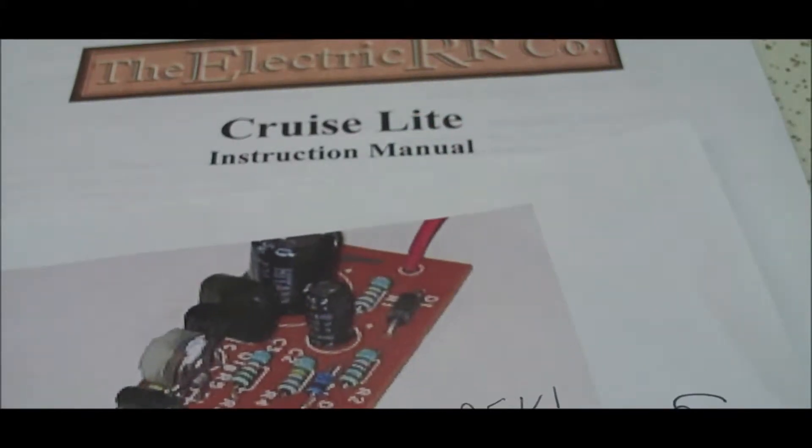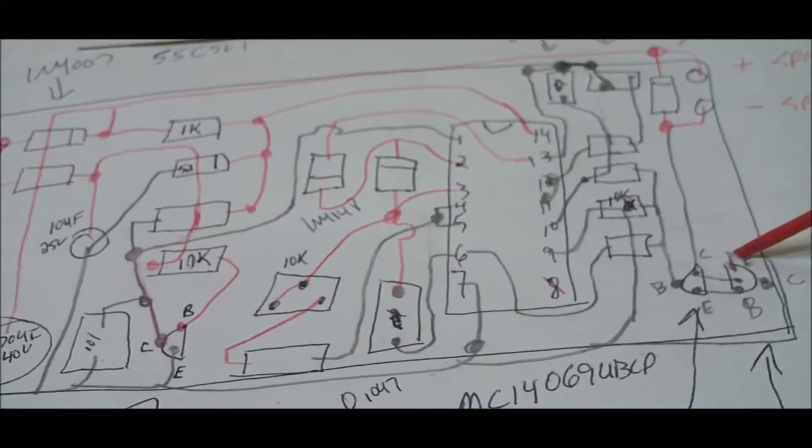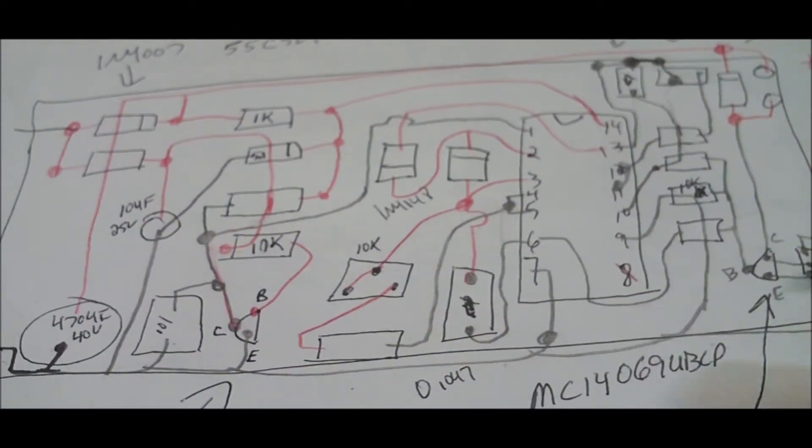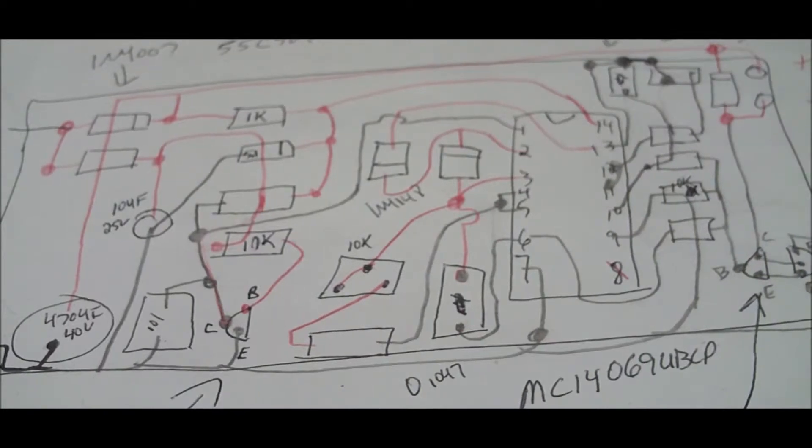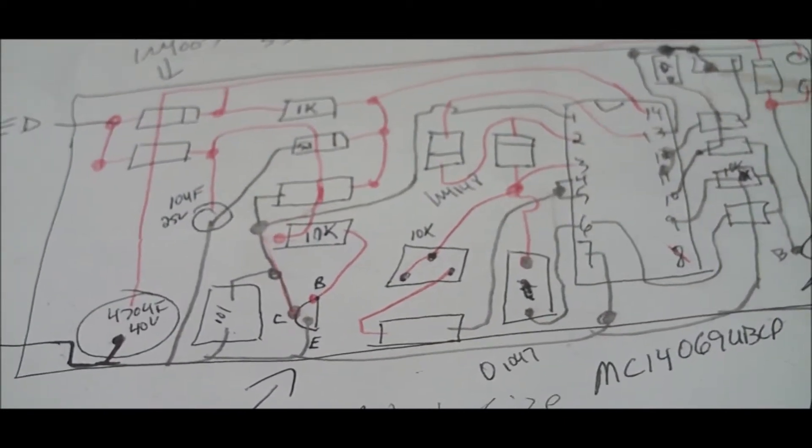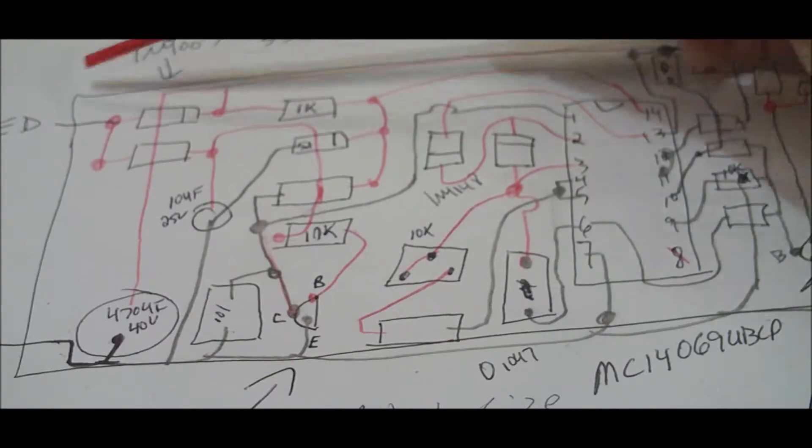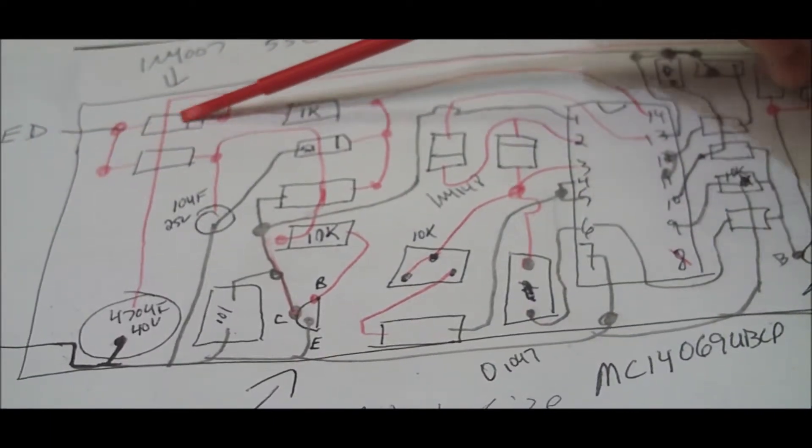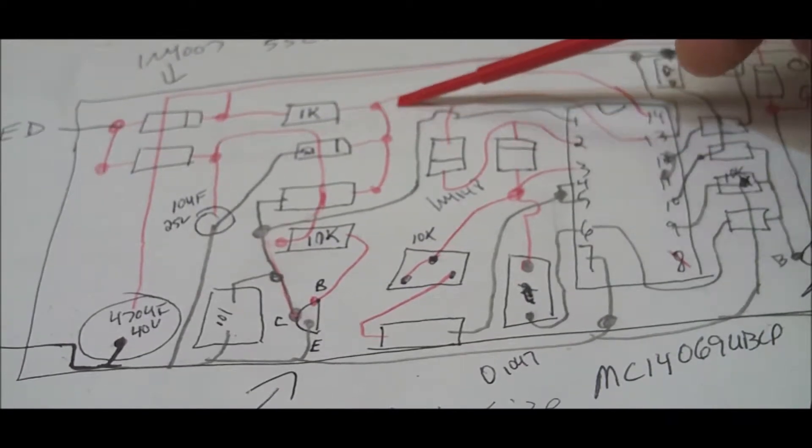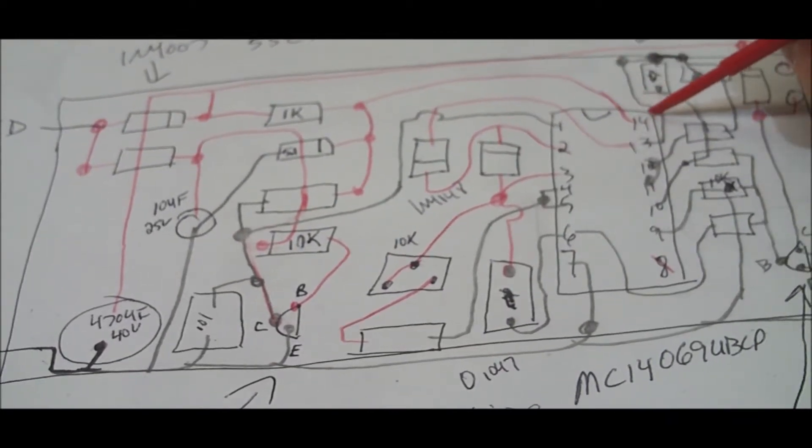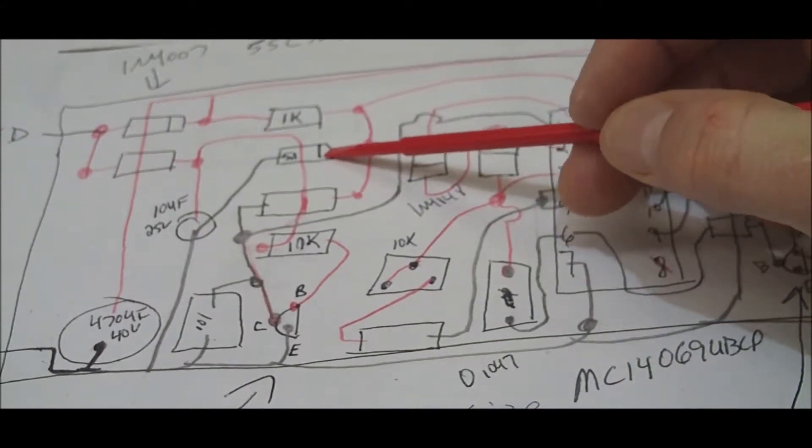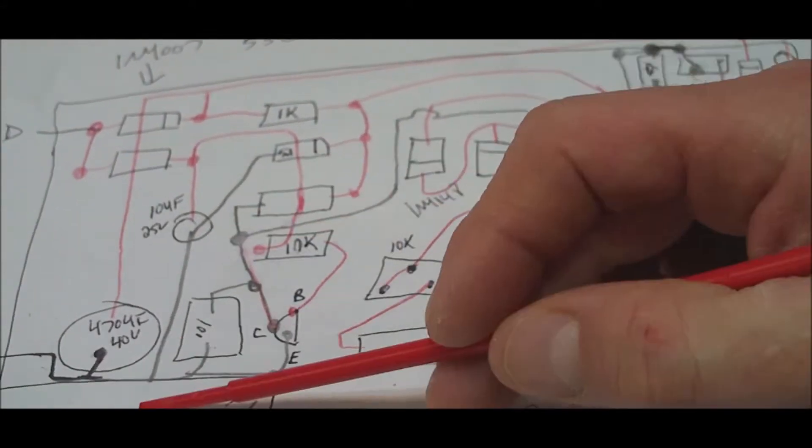So here is the actual schematic from this board. It was pretty easy to reverse engineer because it's all single-sided. What actually happens is your AC power comes through, it gets rectified by this diode, there's a 1k resistor here to limit current to pin 14 which is actually your VCC on this chip, and then there's this 5.1 volt zener diode which goes down to ground so that it cuts the voltage off above 5 volts.